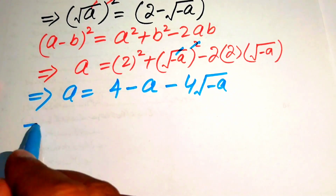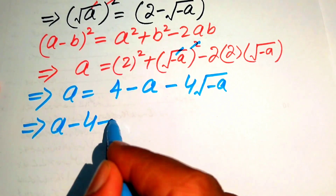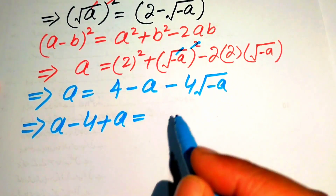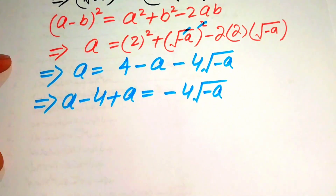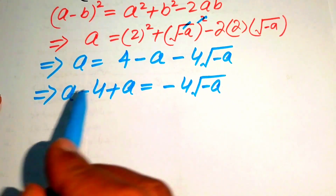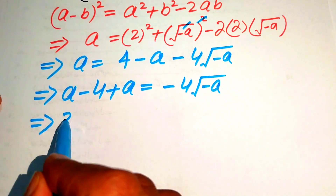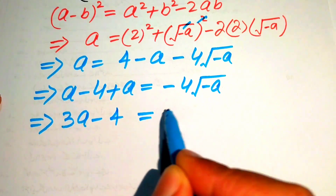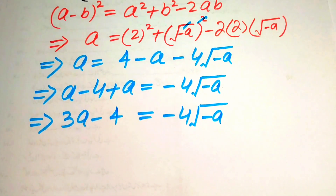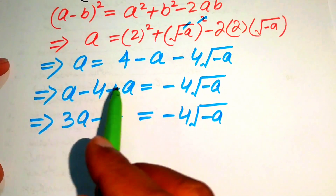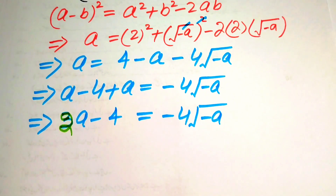We move 4 minus a to the left hand side and get a minus 4 plus a equals minus 4√(−a). Adding the two a terms gives 2a minus 4 equals minus 4√(−a).